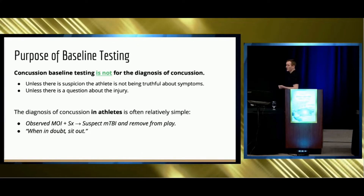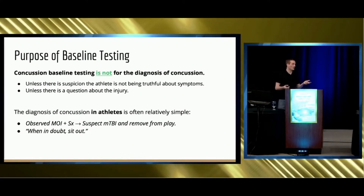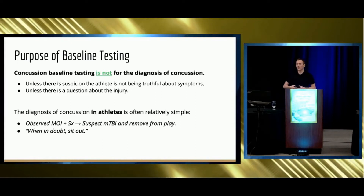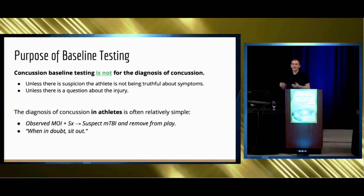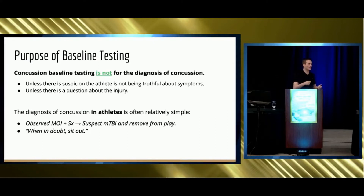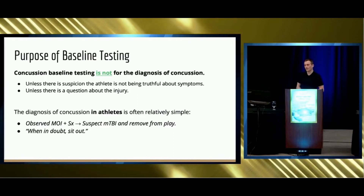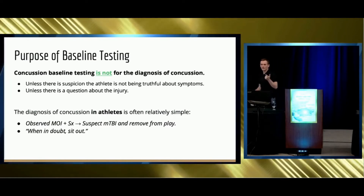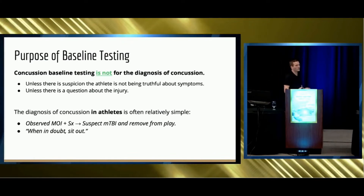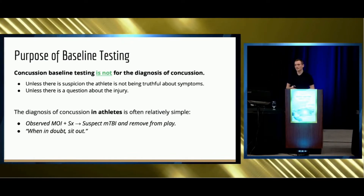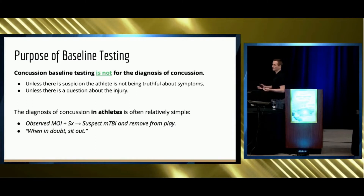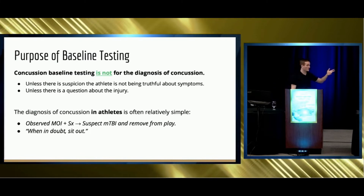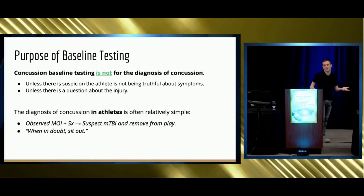If there's a question about the injury, oftentimes we have video review for concussion. We'll watch the videos, and a lot of times it's the gnarly hits where the athlete pops up just fine, and it's these weird little quick hits where you're like, what happened? — and they're concussed and out for the next two or three weeks. So if there's a question about the injury, or whether the athlete is actually telling the truth, that's when you'll do baseline testing. Otherwise, the diagnosis of athletes is really simple: there's a mechanism of injury you saw, there were symptoms, you suspect a TBI, and you get them out. When in doubt, sit out.